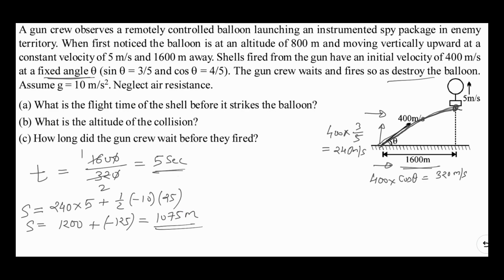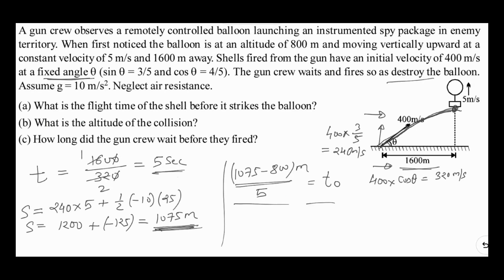The collision altitude of 1075 meters is greater than the balloon's initial altitude of 800 meters. So the balloon needs to rise by 1075 − 800 = 275 meters. Since the balloon is moving up with a constant velocity of 5 meters per second, the time for the balloon to reach 1075 meters is t₀ = 275 / 5 = 55 seconds.